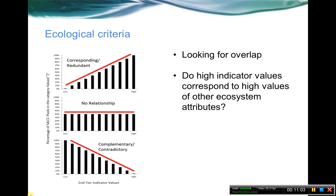For the ecological criteria, we're looking for overlap — are these things co-occurring, and do high indicator values correspond to high values of other ecosystem attributes? A perfectly corresponding or redundant indicator capturing the same thing looks like a line going up. No relationship is flat. A line going down shows it's either a complementary or contradictory indicator — saying something totally different than the indicator itself. So you can compare an indicator and see the different relationships it could have.